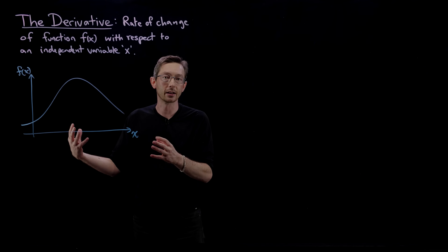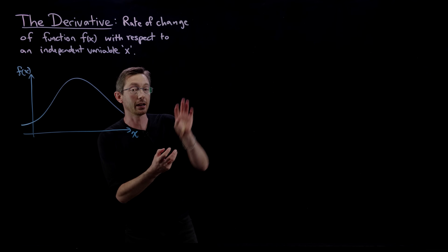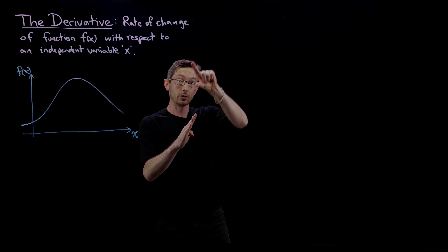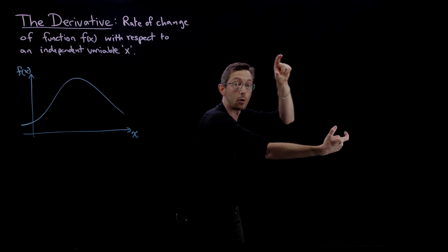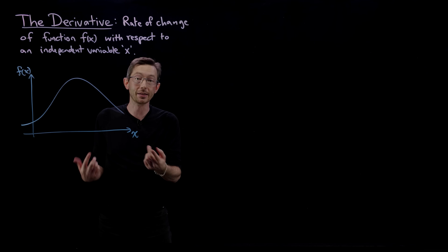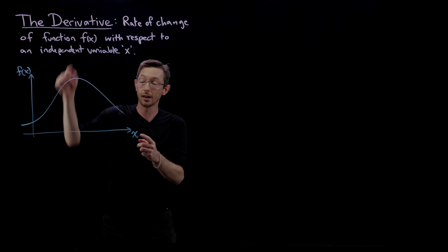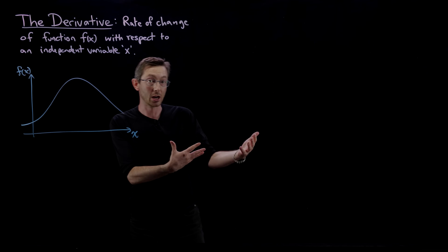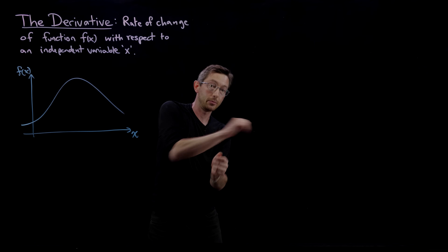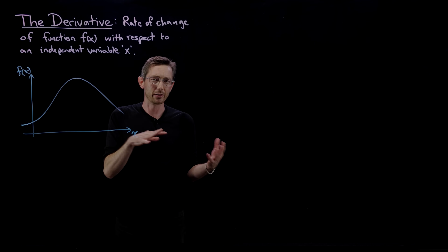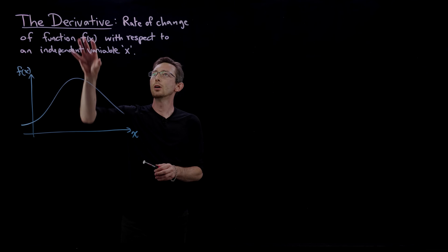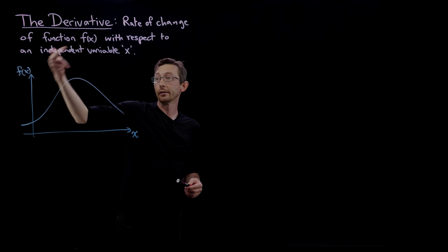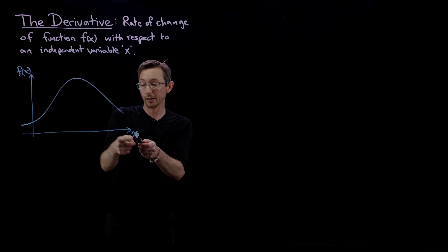This is often introduced in physics — maybe you have a cannonball being shot out of a cannon, and you want to understand what is the rate of vertical climb as the cannonball moves in the horizontal direction x. In that case, f of x would be its vertical position as a function of its horizontal position x. That's one example where you'd want to compute the rate of change or rate of climb of this ballistic cannonball as a function of x.